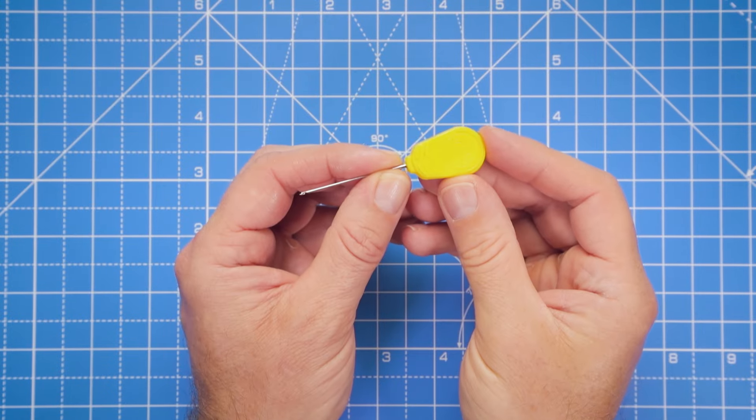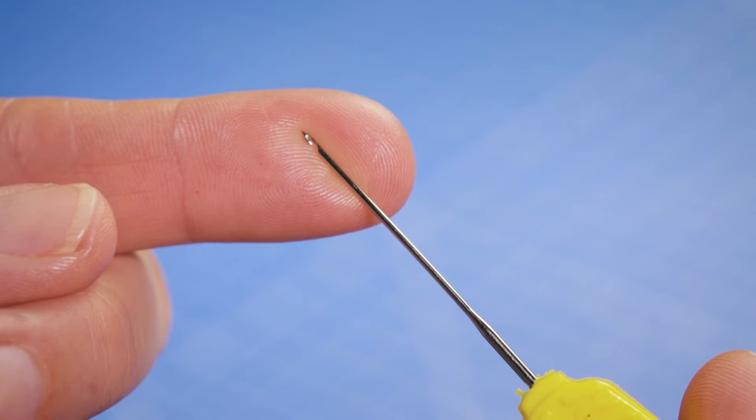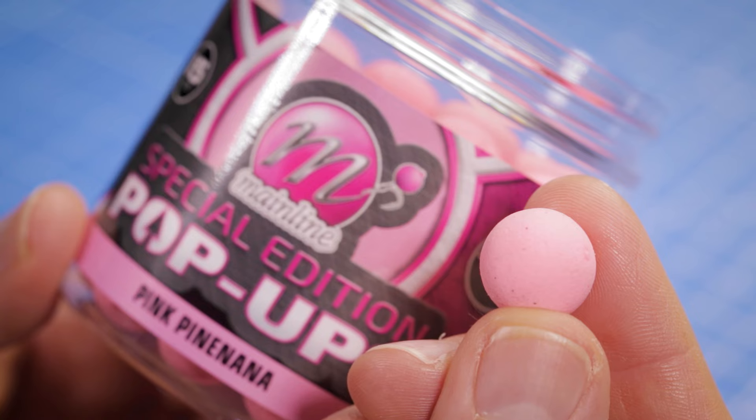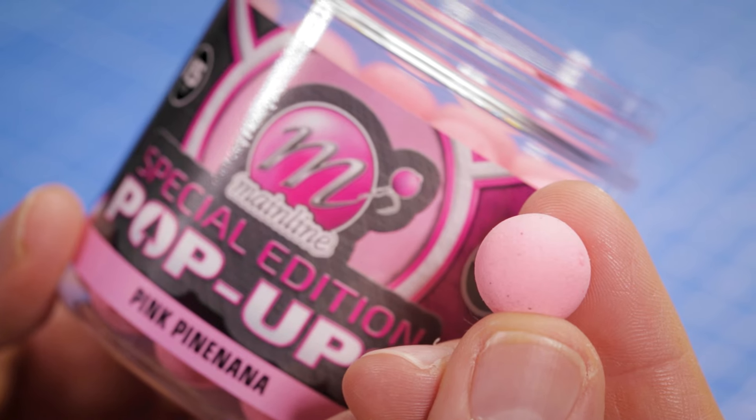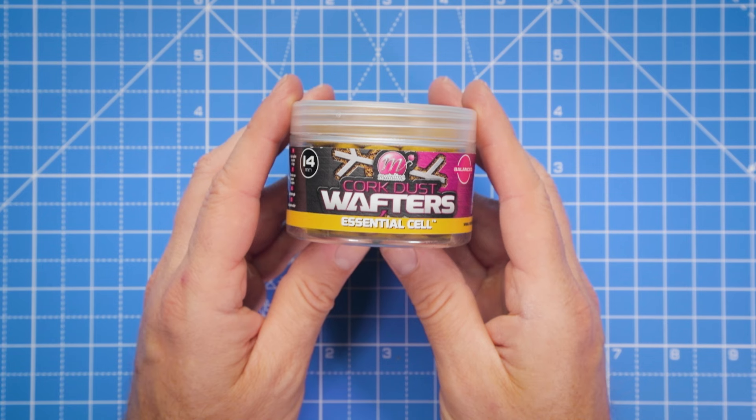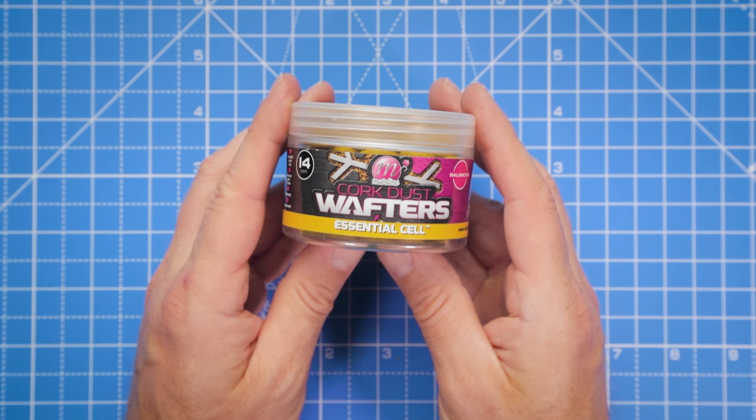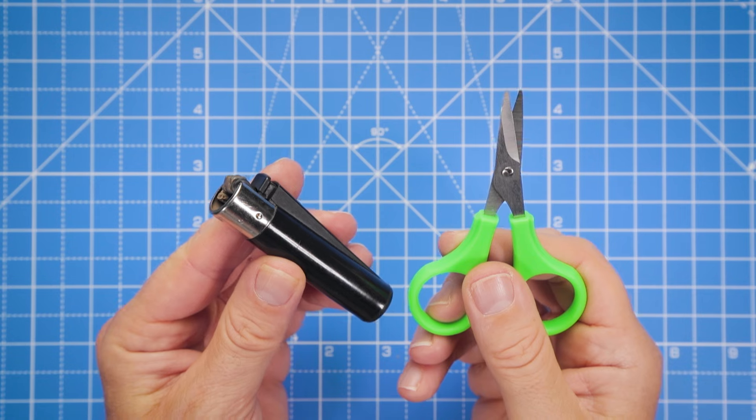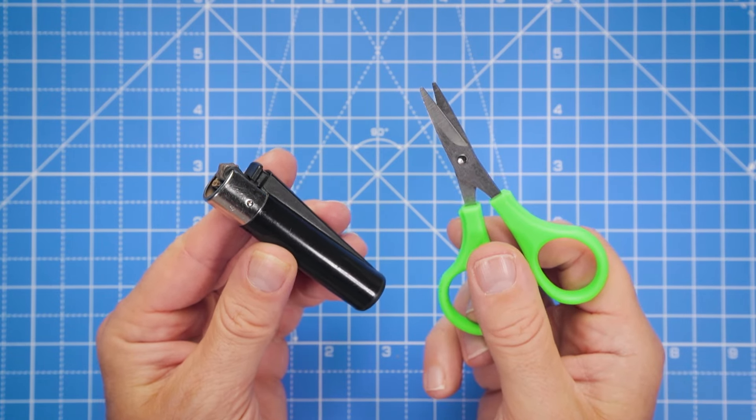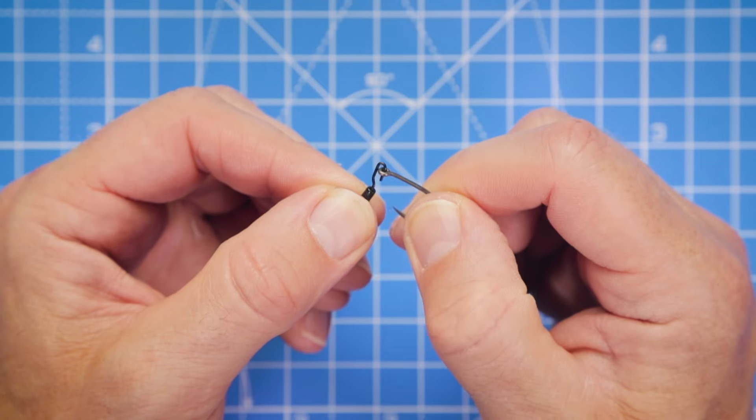To thread on our hook bait, we're going to use a standard boily baiting needle. For the hook bait, we're first going to tie this rig with a pop-up, but the rig isn't just limited to pop-ups, so we're also going to show you how this rig works with a wafter as well. Finally, we've got a lighter to blob down and secure the bait floss, and scissors to trim things up. Okay, let's put this rig together.